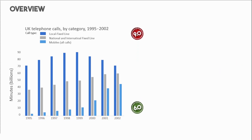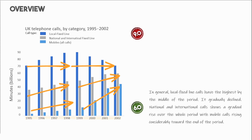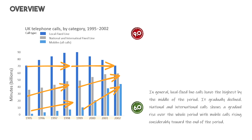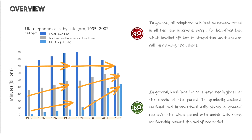Moving on to the overview — this is the band 6.0 example: 'In general, local fixed line calls have the highest by the middle of the period; it gradually declined. National and international calls show a gradual rise over the whole period, with mobile calls rising considerably toward the end of the period.' This is the band 9.0 example: 'In general, all telephone calls had an upward trend in all the year intervals, except for local fixed line, which leveled off, but it stayed the most popular call type among the others.'